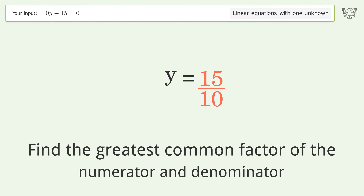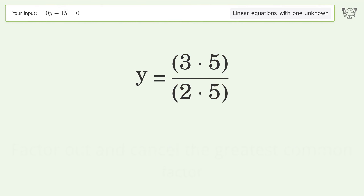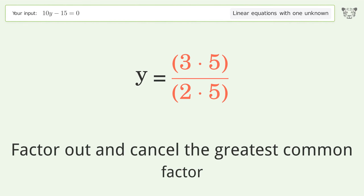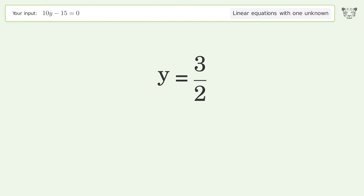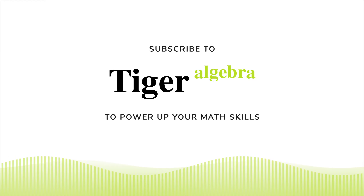Find the greatest common factor of the numerator and denominator, then factor out and cancel the greatest common factor. The final result is y equals 3 over 2.